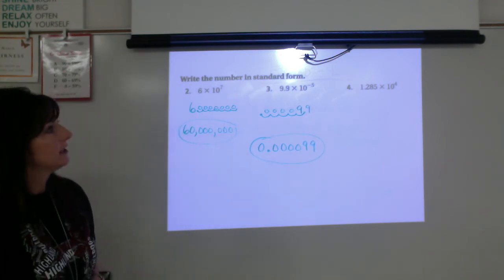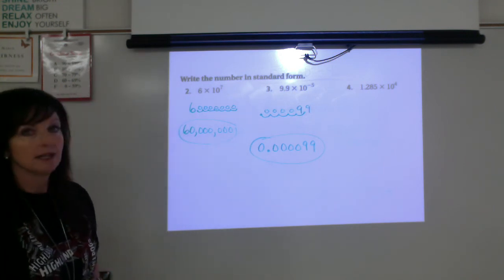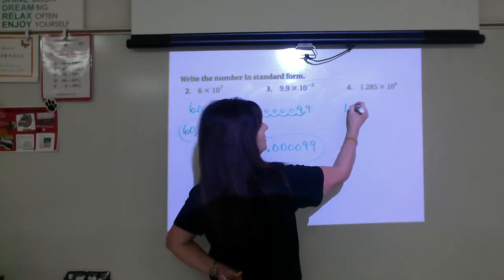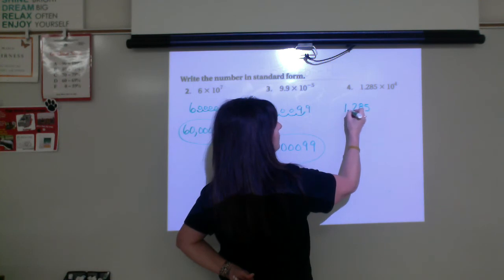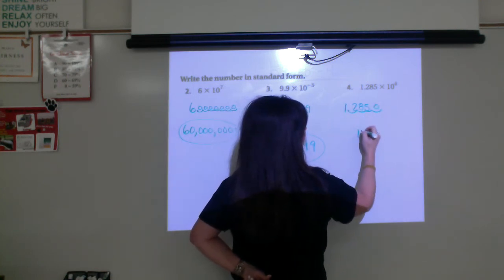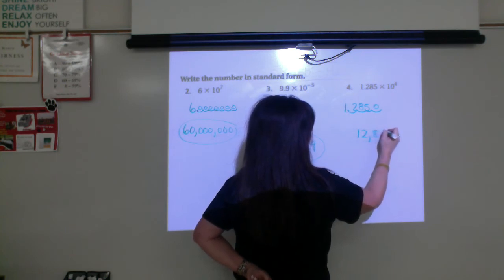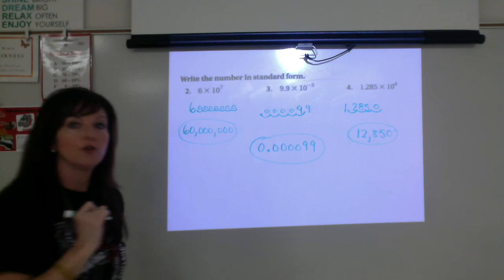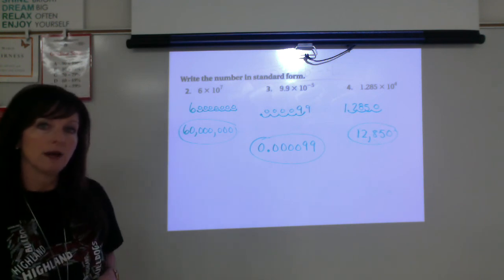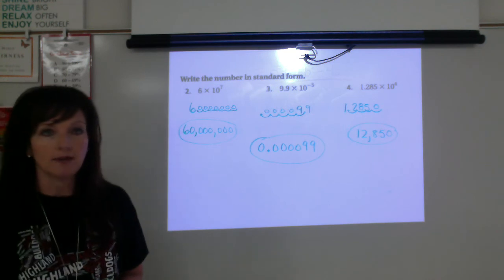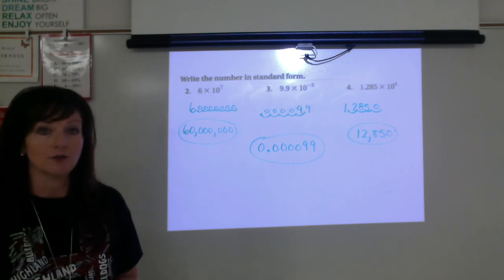And finally, the 1.285 times 10 to the fourth. We want to take the decimal from the 1.285 and move it 4 places to the right. So we'll fill in 1, 0. 12,850 would be standard form. And that's how you'll write that number. Again, you're paying attention to whether or not it is a positive or a negative, and it'll help you decide if it's a large or a small number.